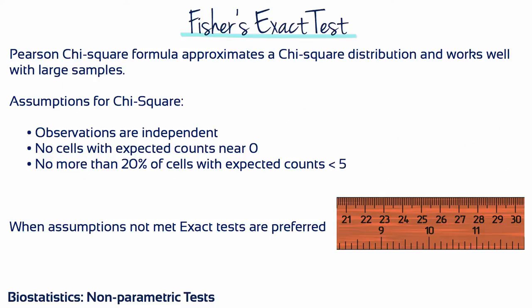The chi-square test statistic actually just approximates a chi-square distribution. It works well for large samples. However, when the sample size is small, the p-value reported is not accurate, which could lead to wrong conclusions. Assumptions for the chi-square test include: no cells should have expected cell counts near 0, and the percent of cells with expected counts less than 5 should not exceed 20%. For example, if a contingency table contains 8 cells and 2 cells had expected counts less than 5, the chi-square cannot be trusted. In such situations, one should use an exact test.